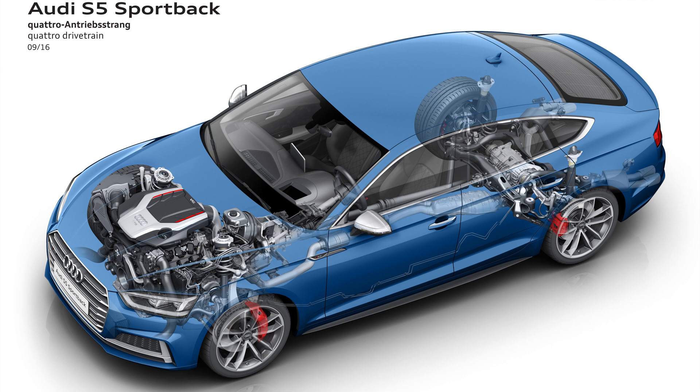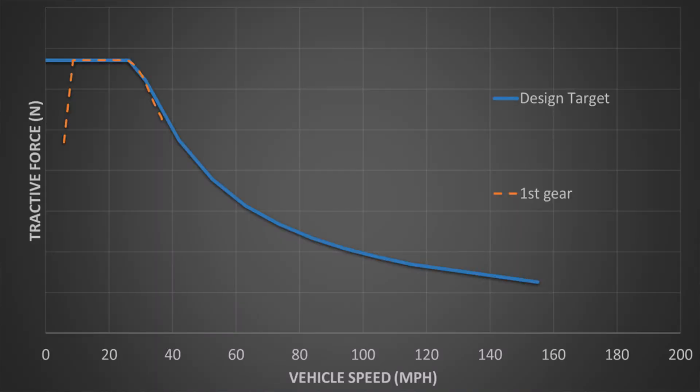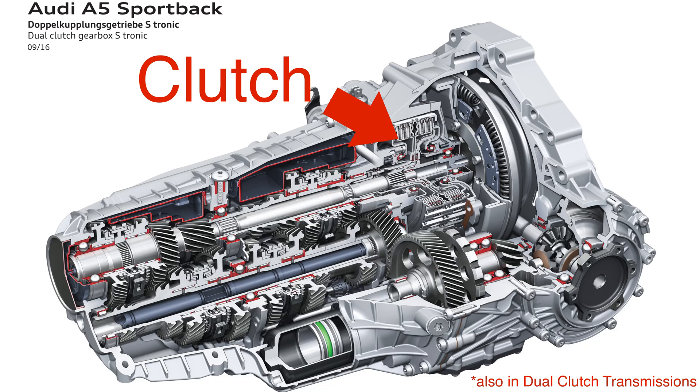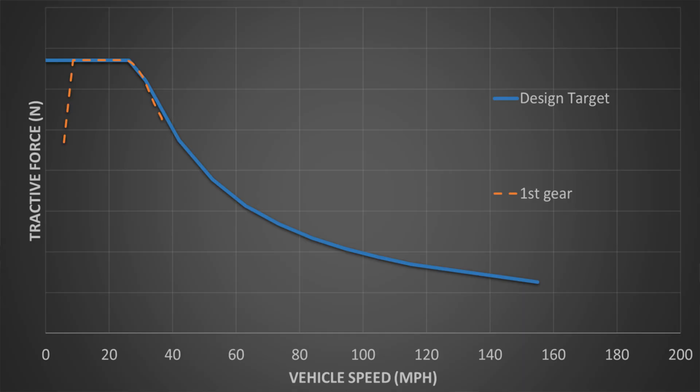Now we will look at how an internal combustion engine and transmission achieves this tractive force curve. First, we will start out by optimizing the first gear ratio in the transmission to achieve our maximum force and get us to the peak part of the curve. As you can see, there's a gap at very low speeds. This exists because engines can't produce torque at very low RPM. So there's components that make up for this shortcoming, namely a clutch in a manual transmission, or a torque converter in an automatic transmission. This allows the engine to stay in an optimal range while allowing the wheel speed to start from zero.